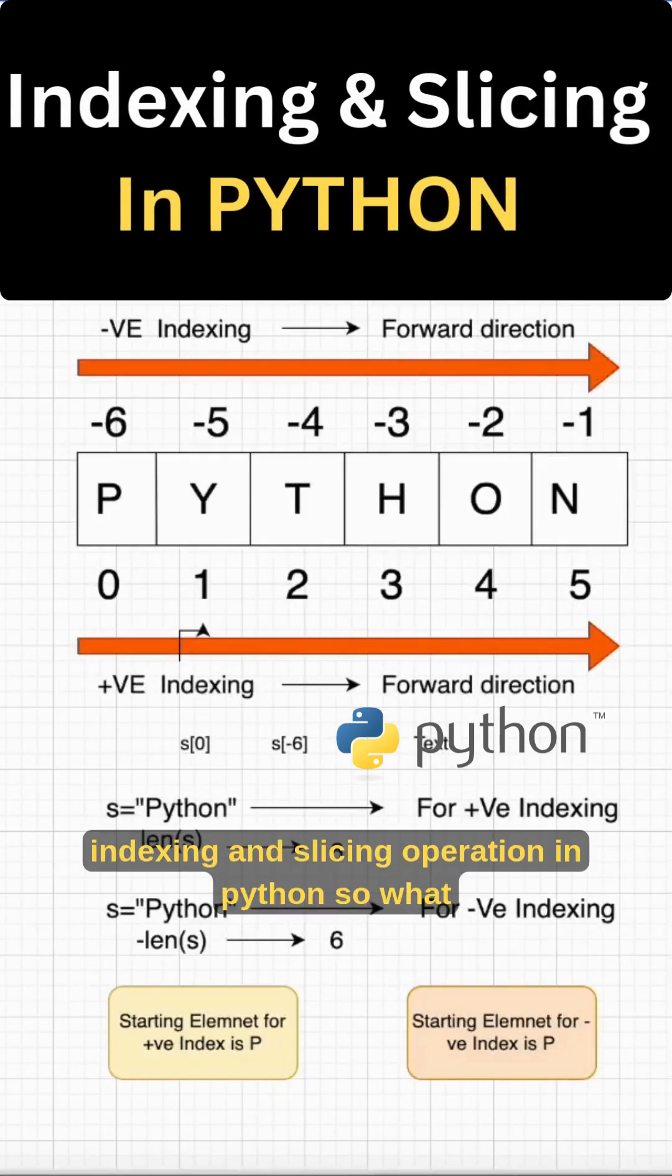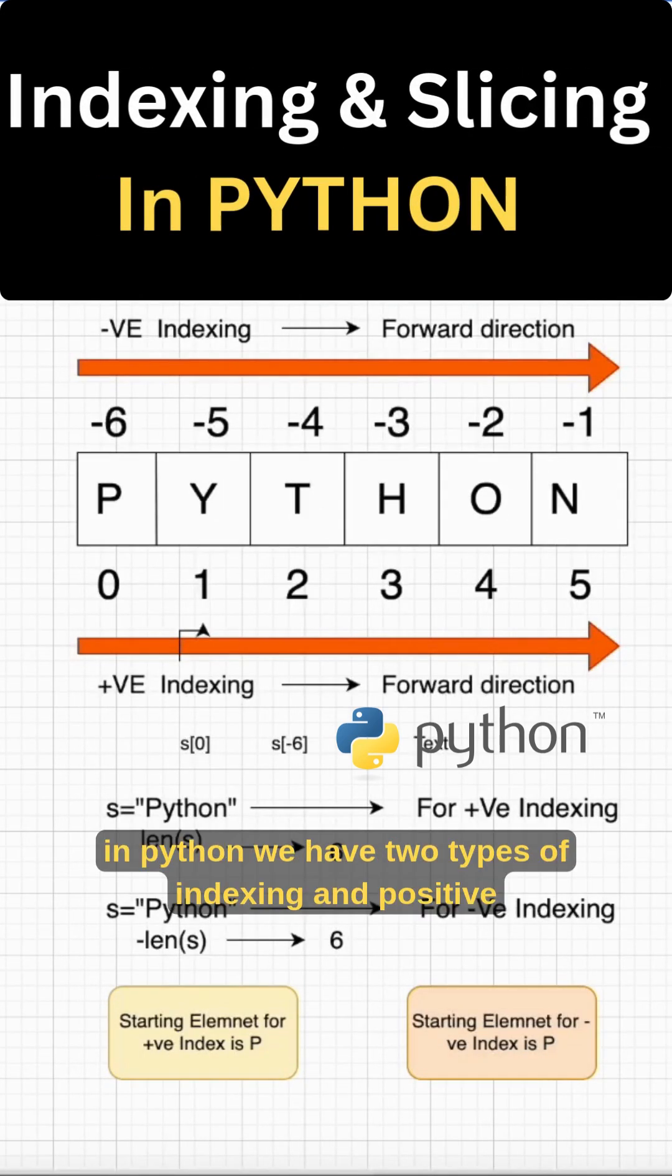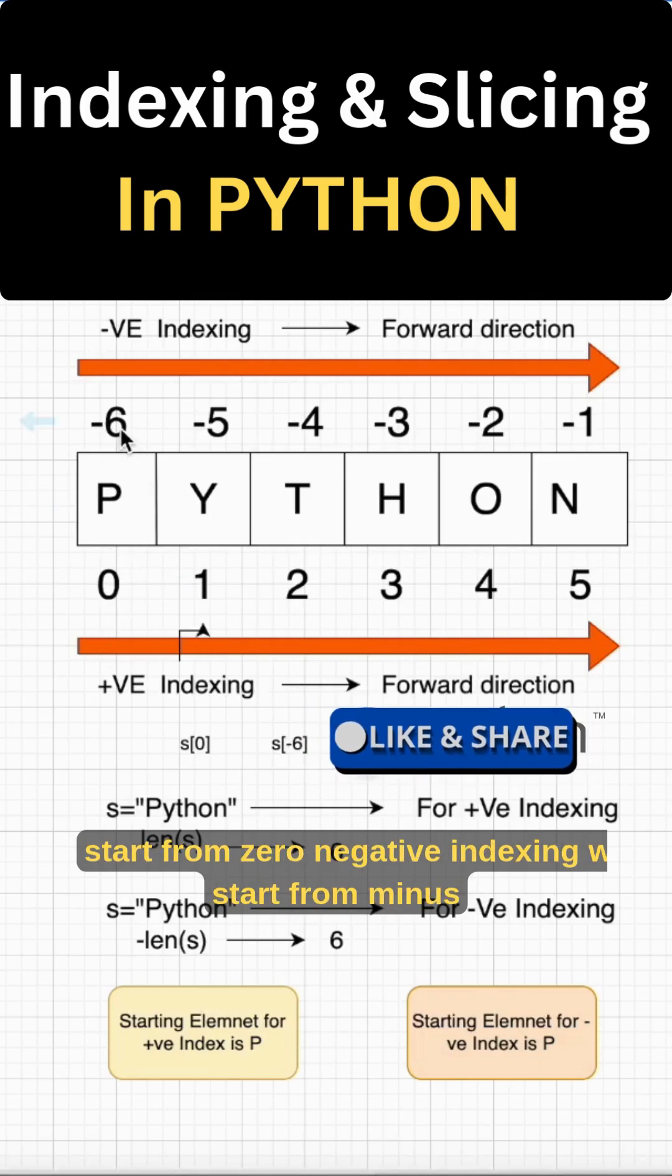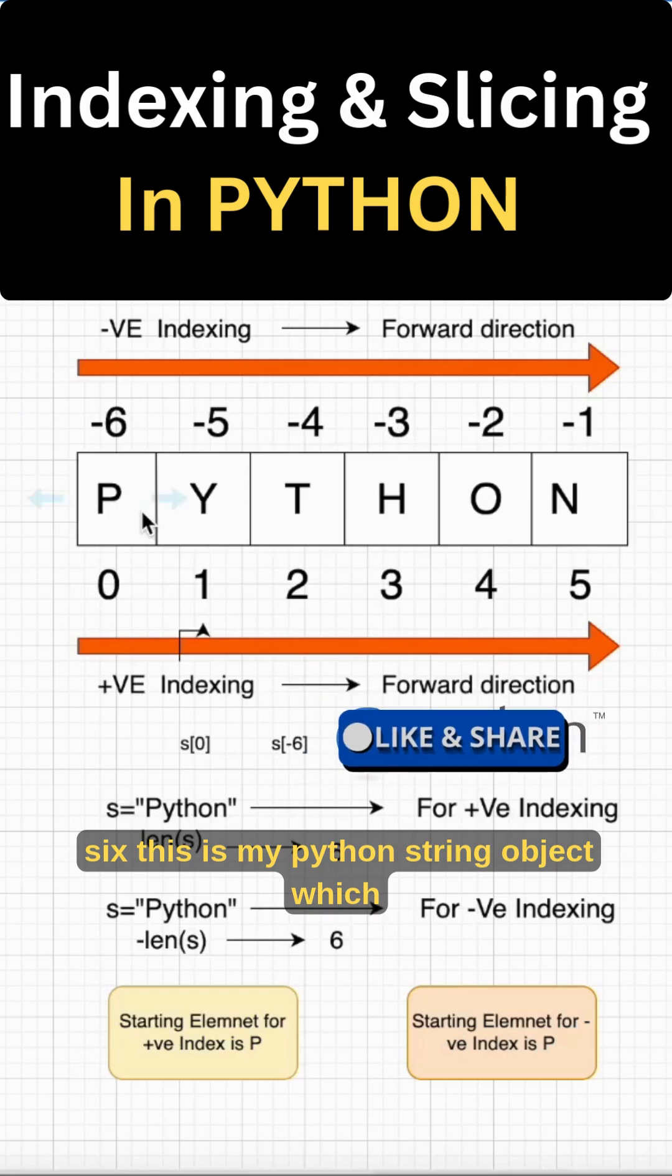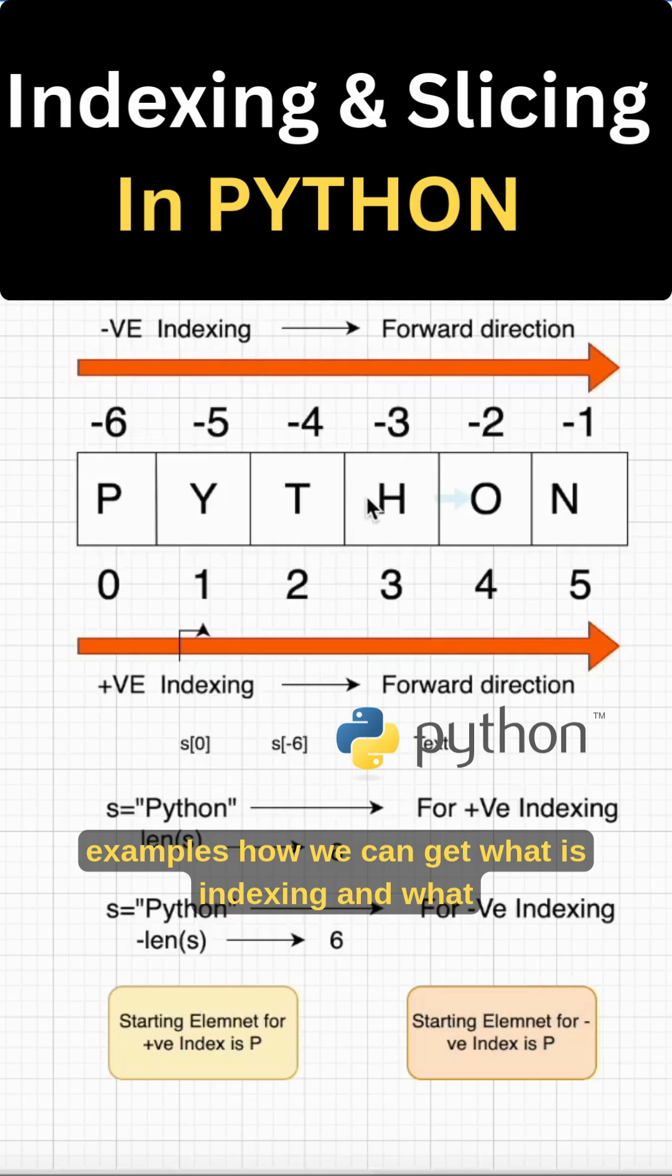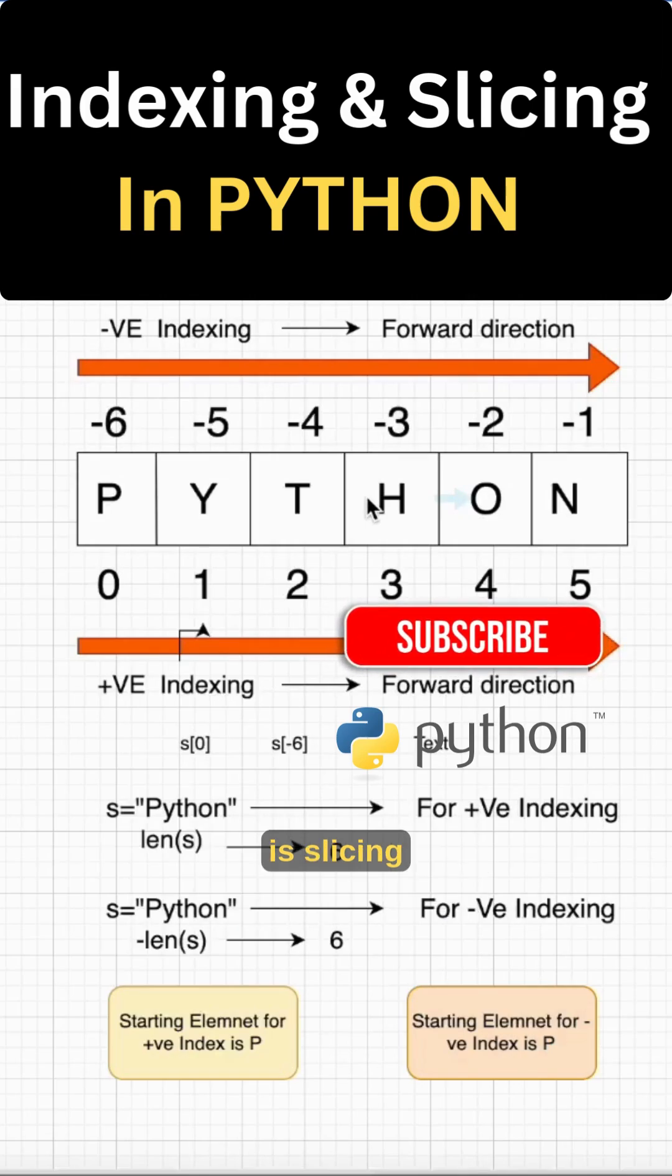Indexing and slicing operation in Python. What is indexing? Here in Python we have two types of indexing: positive indexing and negative indexing. Positive indexing will start from 0, negative indexing will start from minus 6. This is my Python string object. Now we can see some examples, how we can get what is indexing and what is slicing.